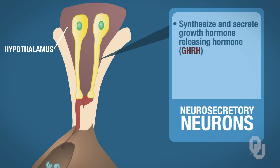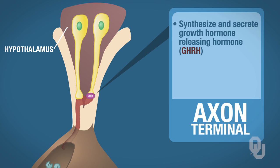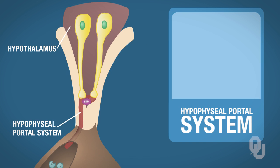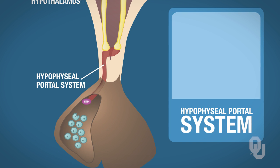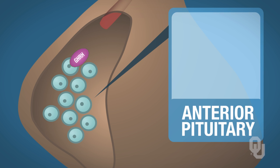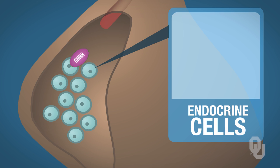GHRH travels down the axon of these neurosecretory neurons and into the axon terminal, where it is released. Growth hormone releasing hormone then enters the hypophyseal portal system, which is basically a capillary system that connects the hypothalamus to the anterior pituitary. There, GHRH binds to receptors on the endocrine cells within the anterior pituitary, signaling those cells to synthesize and release growth hormone.